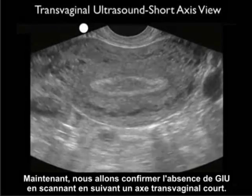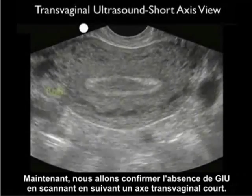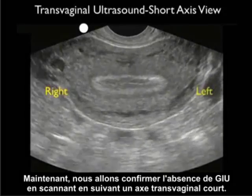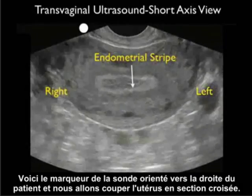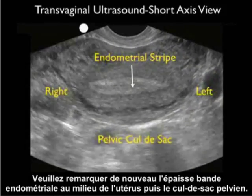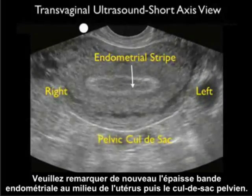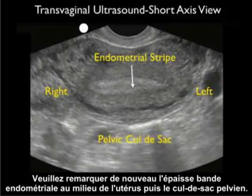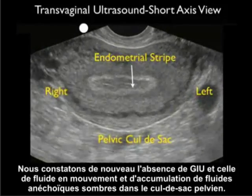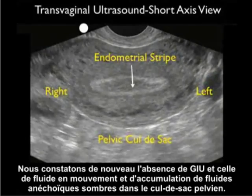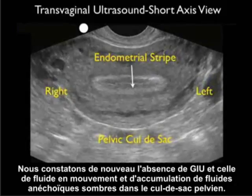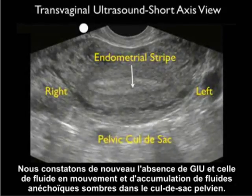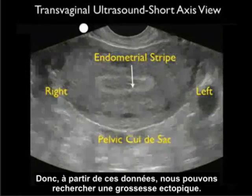Now we'll confirm the absence of an IUP by scanning in the transvaginal short axis plane. Here we have the probe marker oriented towards the patient's right and we're cutting the uterus in cross section. Notice again the thickened endometrial stripe in the midline of the uterus and the pelvic cul-de-sac posteriorly. Again we see the absence of an IUP, and also note the absence of free fluid — dark anechoic fluid collections within the pelvic cul-de-sac. So given these findings, we're now concerned about the presence of an ectopic pregnancy.